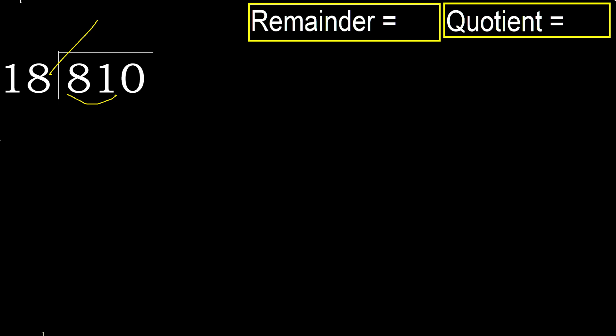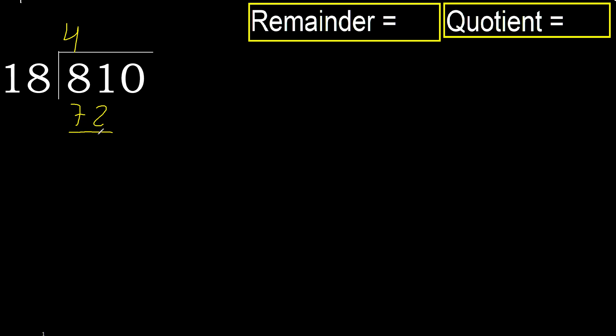18 multiplied by 6 is 108, which is greater. 18 multiplied by 5 is 90, which is greater. 18 multiplied by 4 is 72. 72 is not greater, so we multiply by 4. Subtract: 81 minus 72 equals 9.